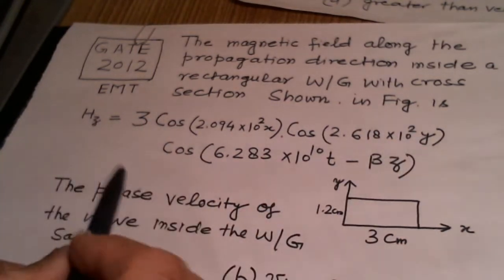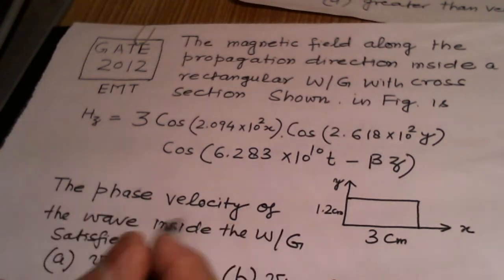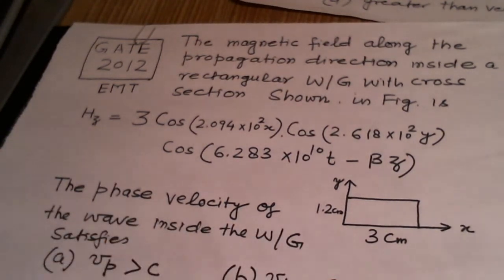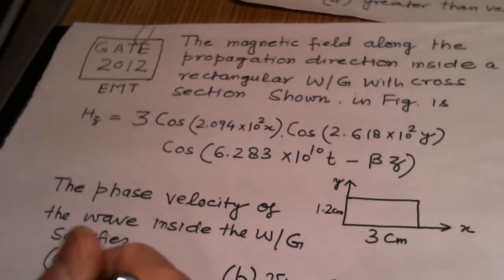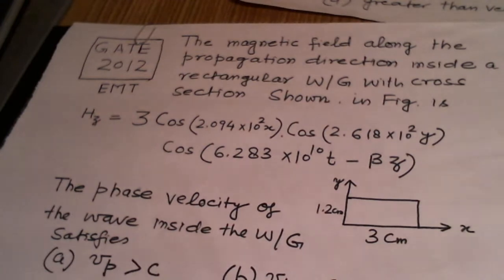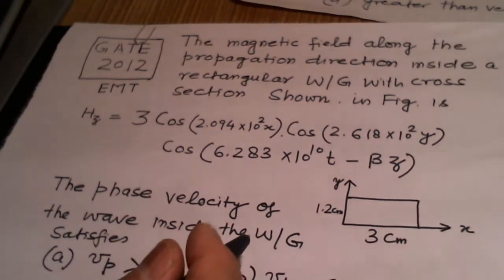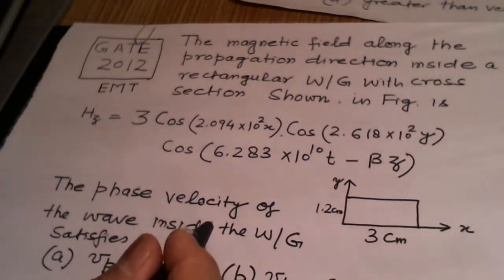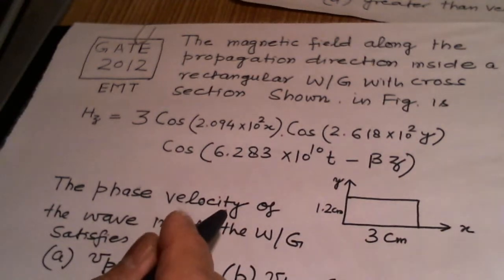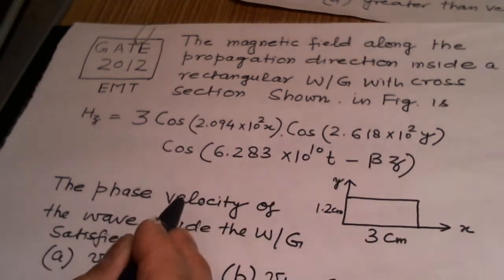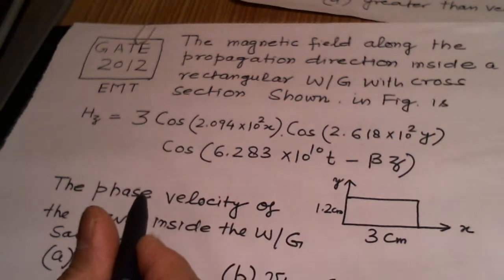So this magnetic field component is given here. The phase velocity of the wave inside the waveguide satisfies: Vp is greater than C, Vp equal to C, Vp is less than C, greater than 0, and Vp equal to 0. All these problems are basically the problems dealing with the phase velocity inside a hollow structure.